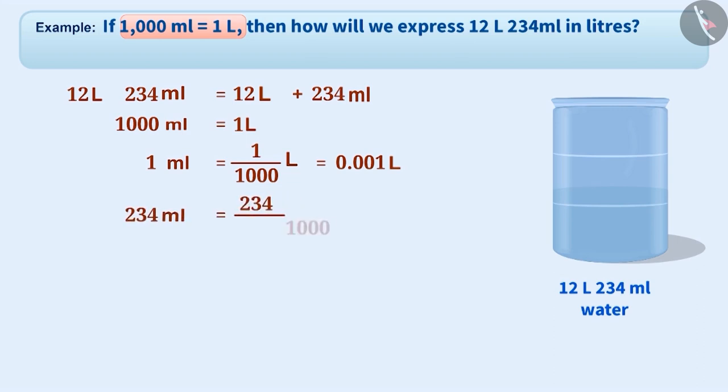Similarly, 234 milliliters is equal to 234 divided by 1000, which is 0.234 liters. Therefore, 12 liters 234 milliliters is equal to 12 liters plus 0.234 liters, that is 12.234 liters.